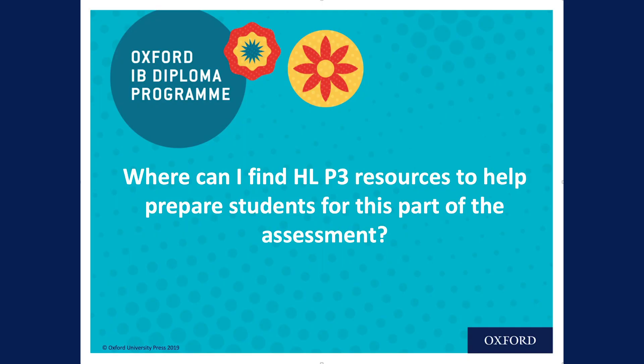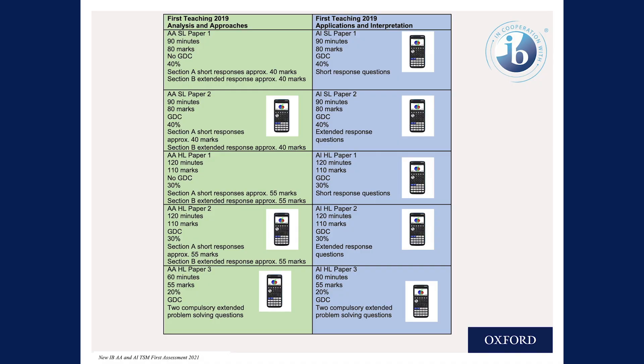Today's frequently asked question is: where can I find higher level paper three resources to help prepare students for this part of the assessment? This is probably one of the most asked questions I get. First of all, let's have a look at an assessment overview. On the left hand side I have the analysis and approaches assessment outline, and on the right hand side the applications and interpretations assessment outline.